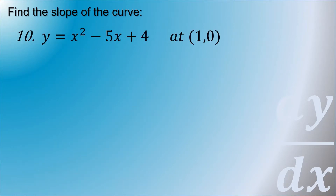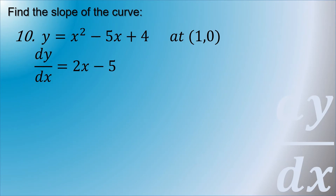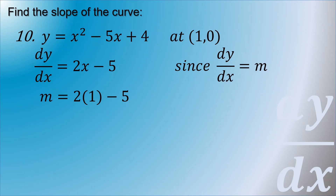Next example: find the slope of the curve y equals x squared minus 5x plus 4 at the point (1, 0). First, derive dy/dx, which equals 2x minus 5. Since dy/dx gives the slope, substituting x equals 1: slope equals 2(1) minus 5, which equals negative 3. So the slope at that point is negative 3.